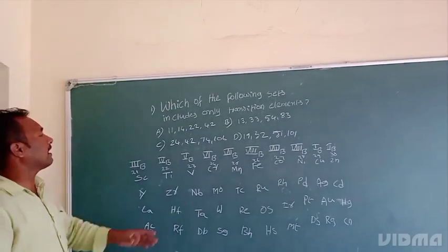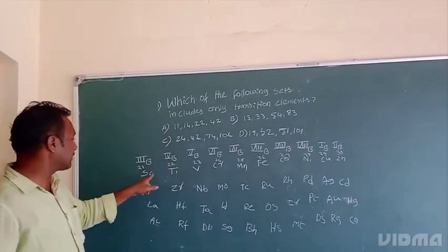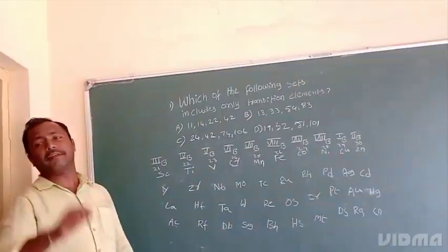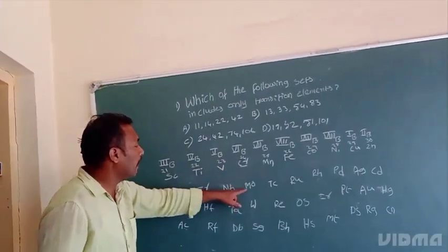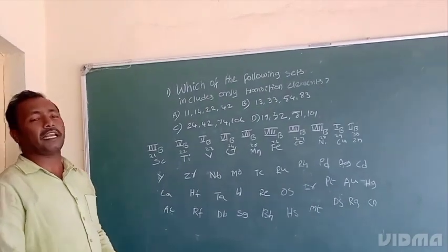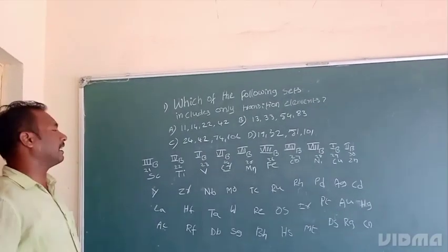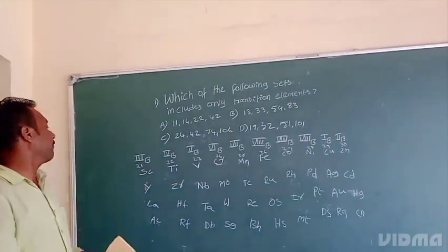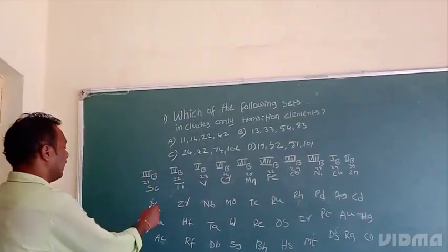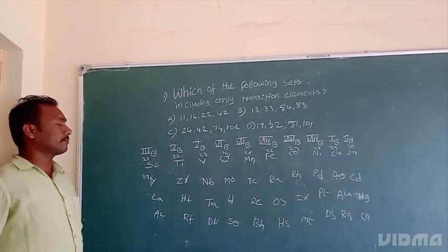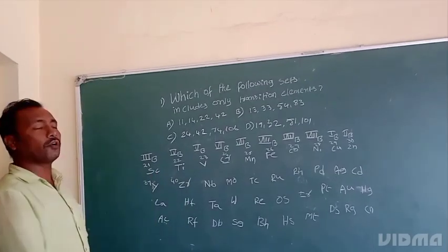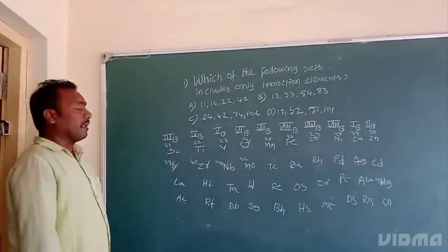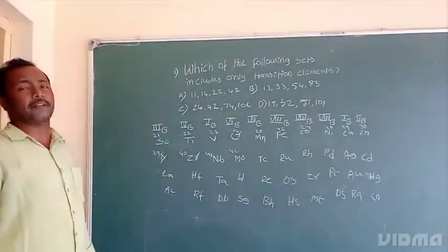Now we have the sets. First 11, 24. 24 is the 6B group series chromium element. Next molybdenum, the atomic number is 42. Zirconium atomic number is 40. Germanium is 32. So 40, 32, 74.